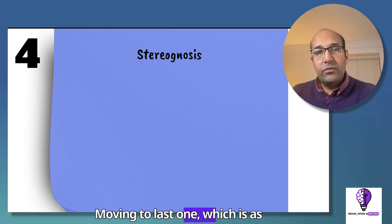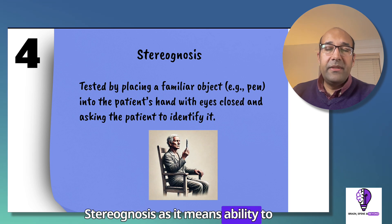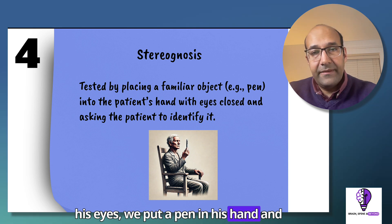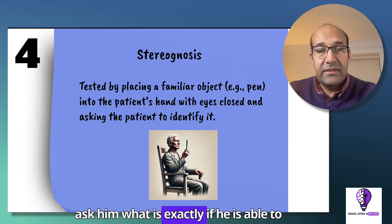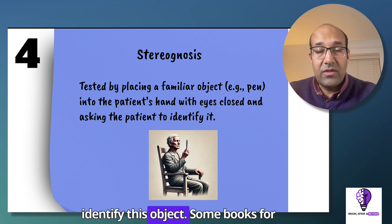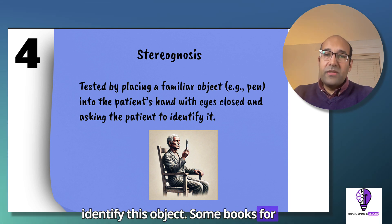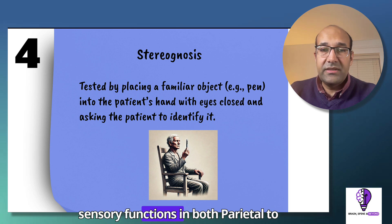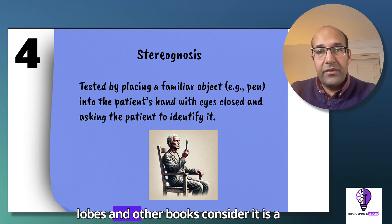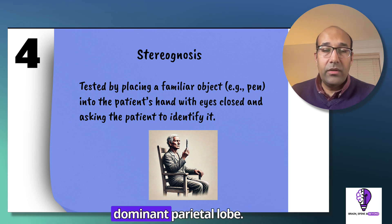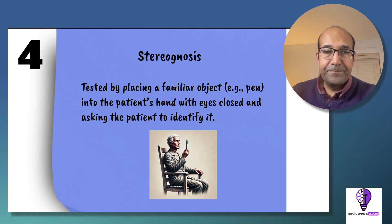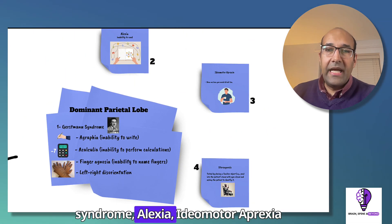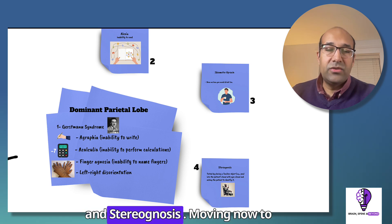Moving to the last item, which is stereognosis — the ability to identify objects while the patient has his eyes closed. We place a pen in his hand and ask if he can identify the object. Some books for neuroexamination consider stereognosis as one of the common sensory functions in both parietal lobes; other books consider it specific to the dominant parietal lobe. So for the dominant left lobe, we talk about Gerstmann syndrome, alexia, ideomotor apraxia, and stereognosis.